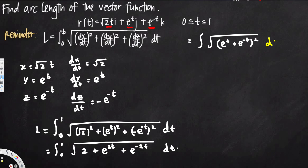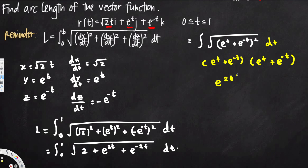Let's verify this by expanding (e^t + e^(−t))². Writing it out as two factors: e^t times e^t gives e^(2t), e^t times e^(−t) gives e^(t−t) = e^0, e^(−t) times e^t gives e^0 again, and e^(−t) times e^(−t) gives e^(−2t).